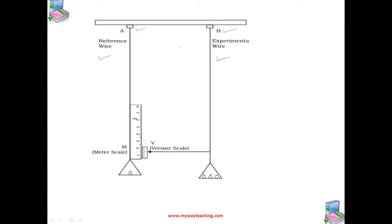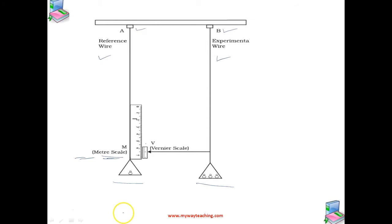Wire A is called the reference wire. It carries a meter scale. Wire B is the experimental wire of uniform area of cross section, and it carries a pan in which known weights can be placed. A vernier scale is attached to the pointer at the bottom of the experimental wire B, and the main scale is attached to the reference wire A.